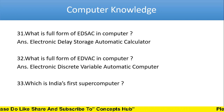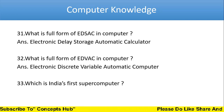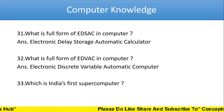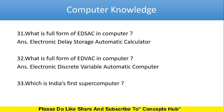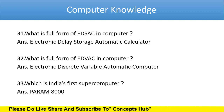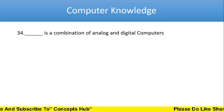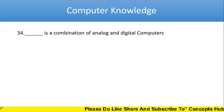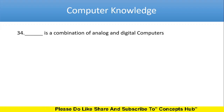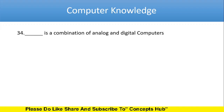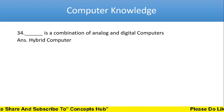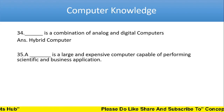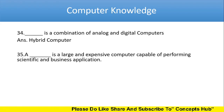Next question: which is India's first supercomputer? The answer is PARAM 8000. Next question: dash is a combination of analog and digital computers. The answer is hybrid computer — a hybrid computer is a combination of analog and digital computer.